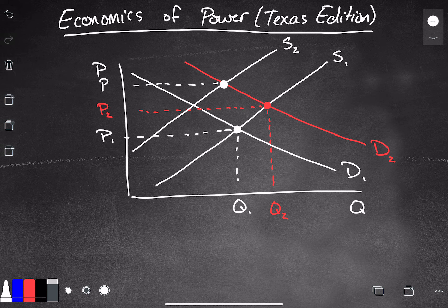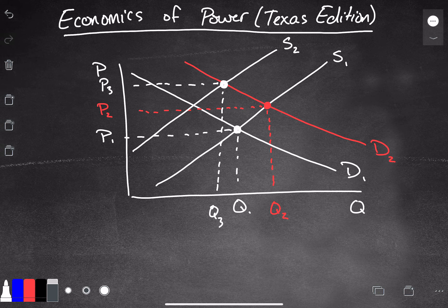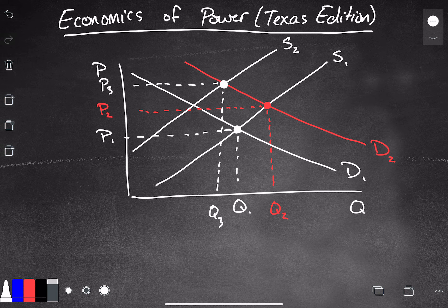And that's going to yield an even higher price. Now, I've drawn it in this case where the quantity is actually going to decrease. And I think that makes sense given what we've seen in the news. It seems to be that there's less electricity available for all people. And so what we have is an astronomically high price and a reduced quantity.